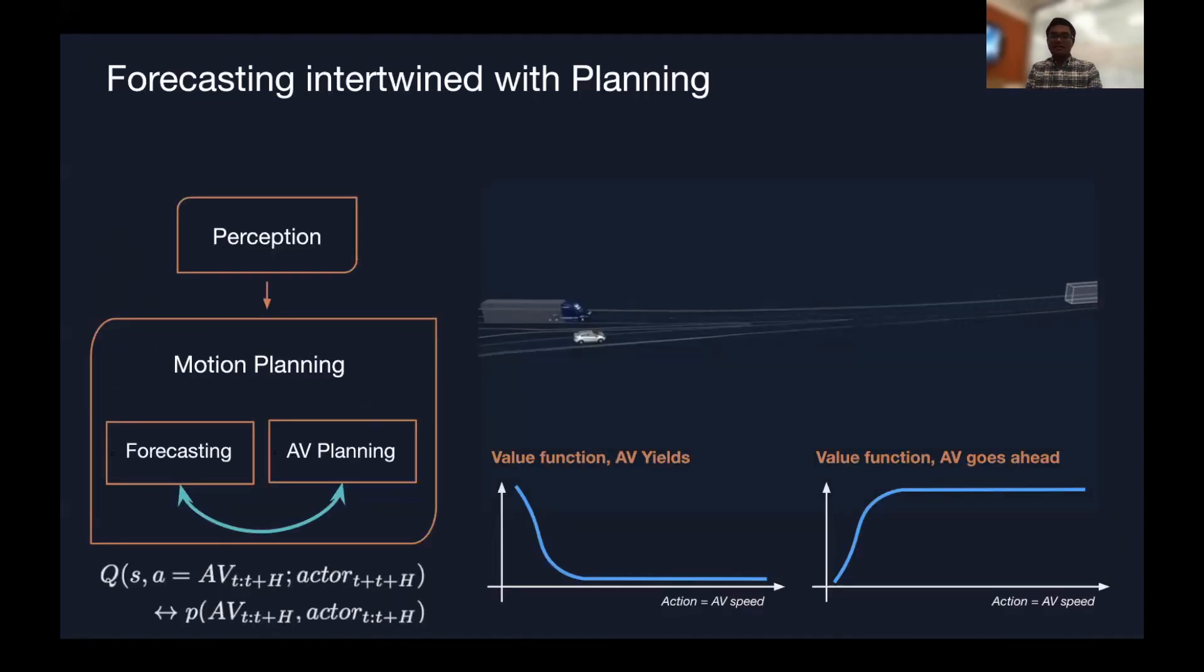And this is the Aurora approach for how we think about forecasting, is that forecasting is intertwined with planning. We want to make the perception system feed into the motion planning system and have forecasting and planning work together to help define out what we think is the value function for various modes of behavior that could happen in the world. And then in continuous space, how do we think about how our actions like speed that we can choose relate to the goodness of how to take that action? That's illustrated here.